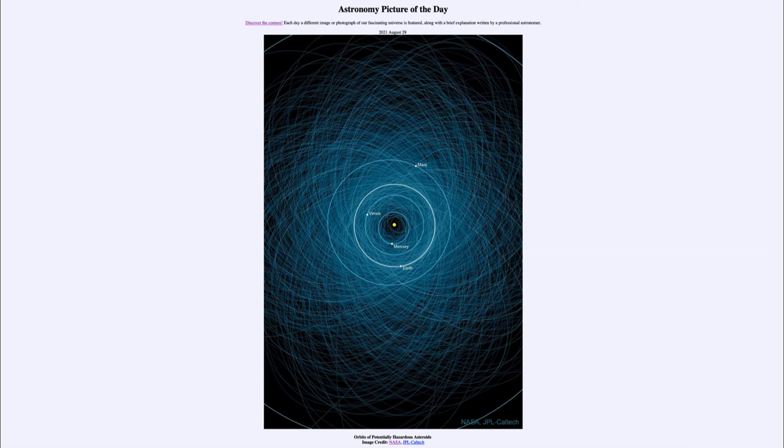It's hard to track them because many are very dark and small. Something 140 meters across is not all that large, and trying to look at it over many millions, tens of millions, and hundreds of millions of miles away is very difficult, making it almost impossible to track all of these and to find them.